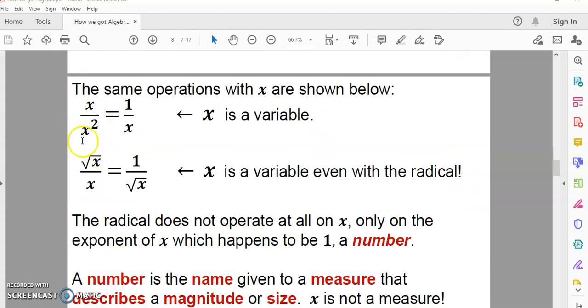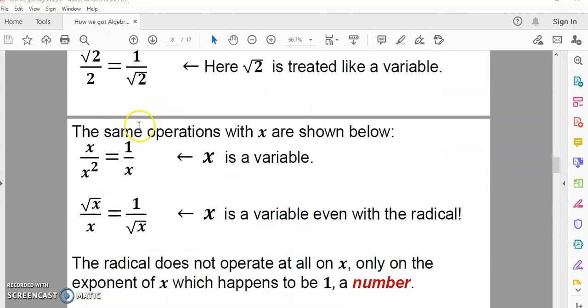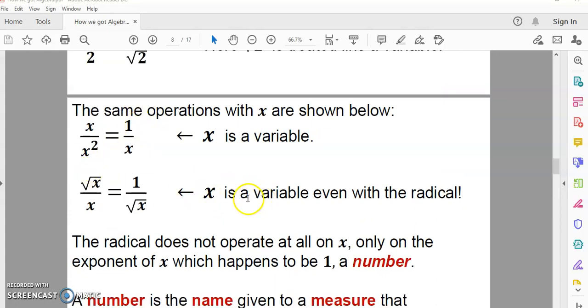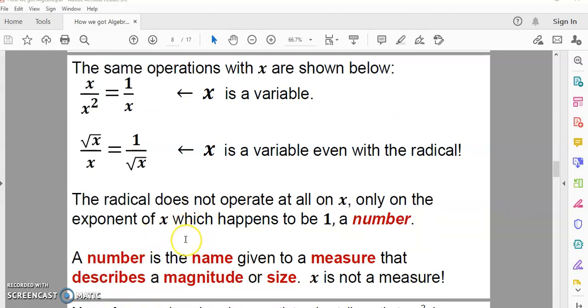And if we replace both of the pi and the square root 2 with x, the result is the same. And you'll notice here that x is a variable even with a radical, because if you do an operation on any symbol with a radical, it doesn't touch the symbol at all. It works only on the exponent. So, it operates on the exponent, which happens to be, in this case, a 1. And 1 is a number.